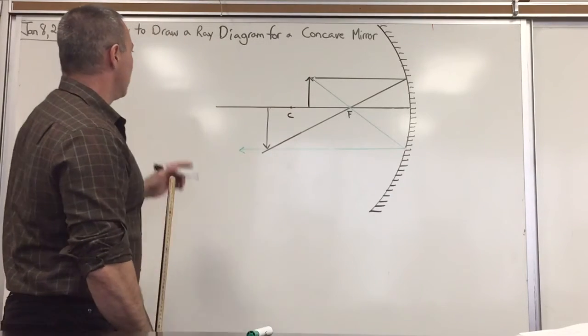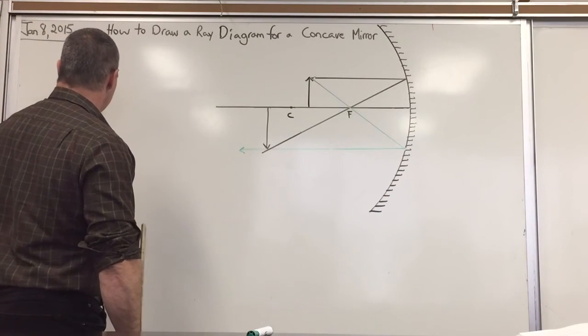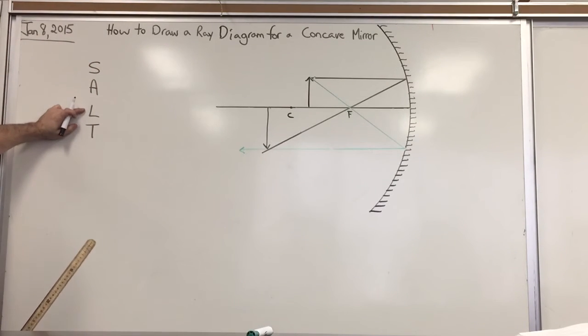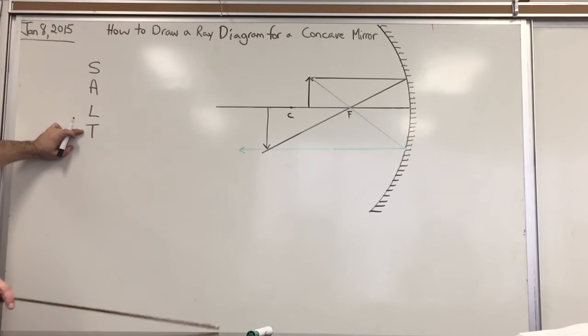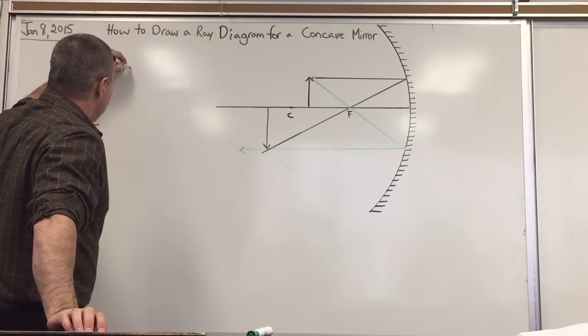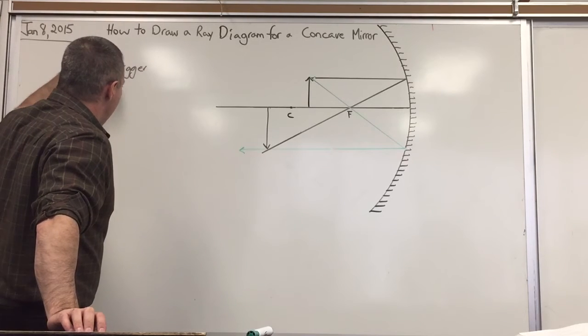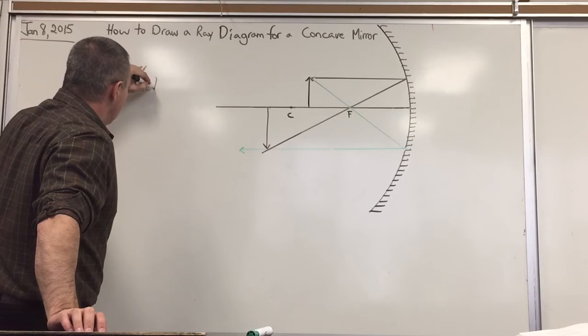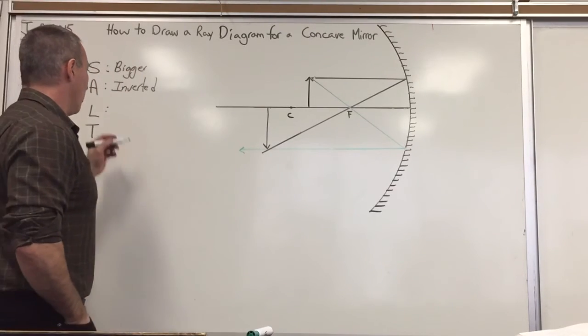So if you analyze the image using our famous technique, SALT, where S stands for size, A for attitude, L for location, T for type. The size of the image is bigger in this case. The attitude is inverted. It gives you an upside down image. The location is in front of the mirror.